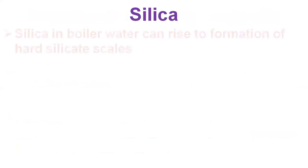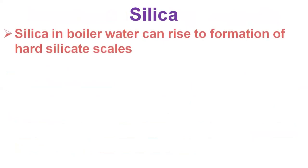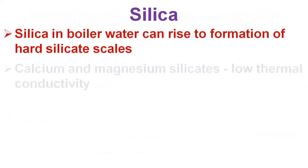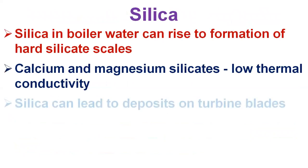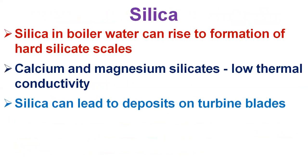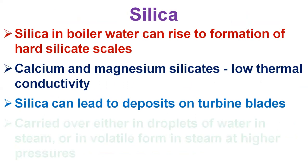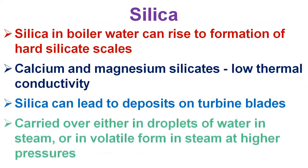The presence of silica in boiler water can give rise to the formation of hard silicate scales. It can also associate with calcium and magnesium salts, forming calcium and magnesium silicates of very low thermal conductivity. Silica can also give rise to deposits on steam turbine blades, being carried over either in droplets of water in steam or in volatile form in steam at high pressures.